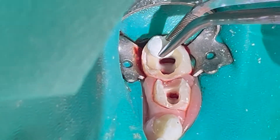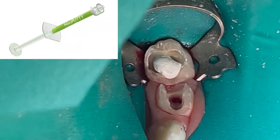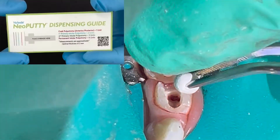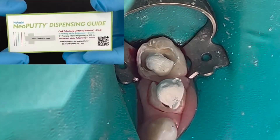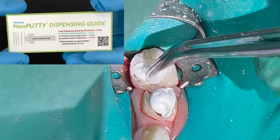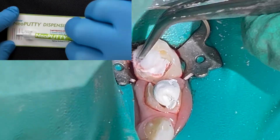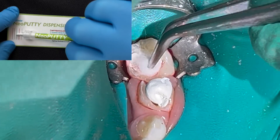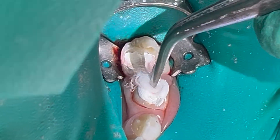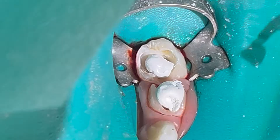I am going to be filling this tooth with Neoputty by NewSmile. My previous video goes into the IFU for this product. I do like the Neoputty dispensing guides that come with the Neoputty tubes. It shows how much Neoputty your staff member needs to dispense for a single pulpotomy or two pulpotomies. I do think it helps eliminate waste of the product and makes it a more cost-effective material.